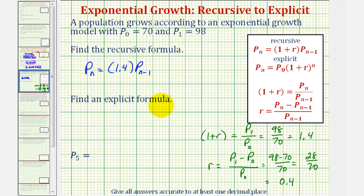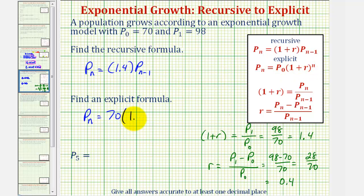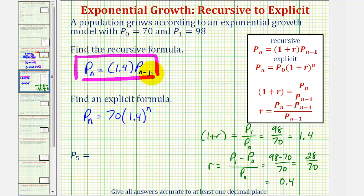And now let's find the explicit formula, which is given here. We'd have pₙ equals p₀, which is given as seventy, times the growth factor or the quantity one plus r raised to the power of n — so we have one point four raised to the power of n. Here's our recursive formula for exponential growth and here's the explicit formula for exponential growth.